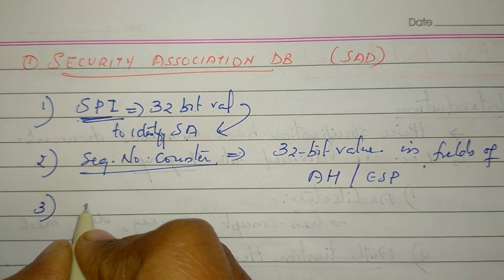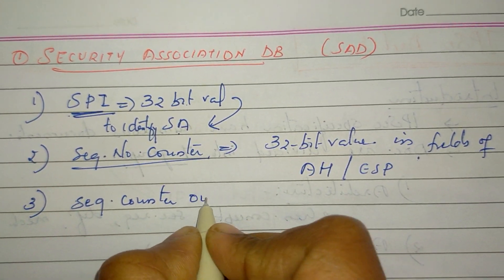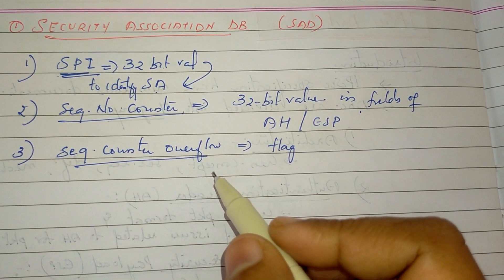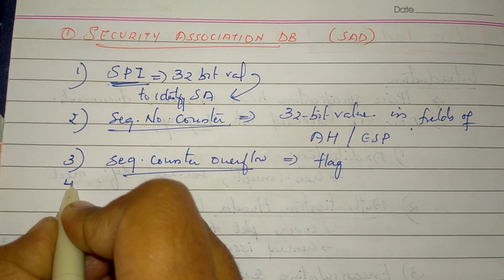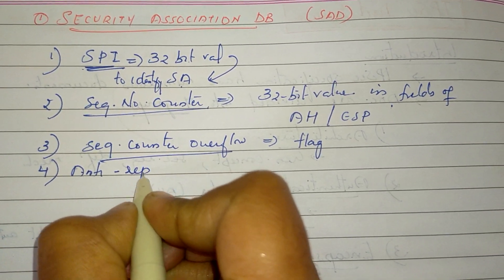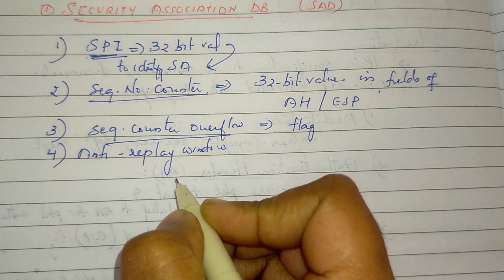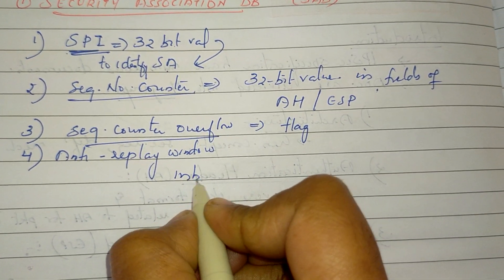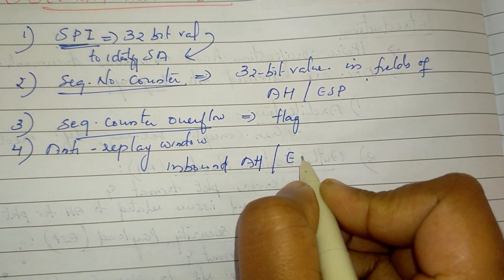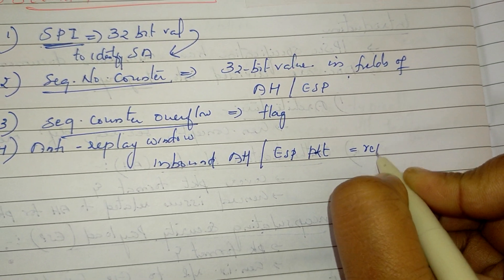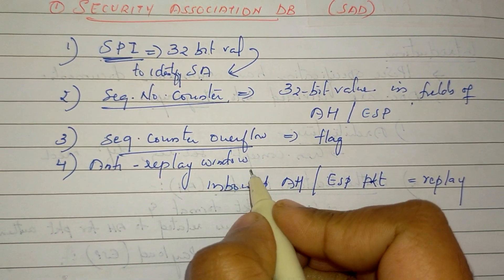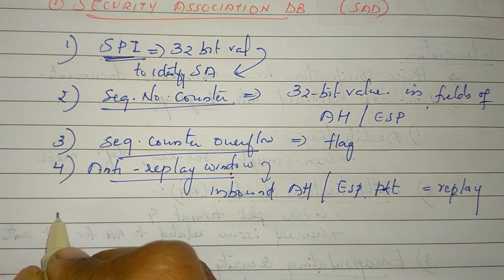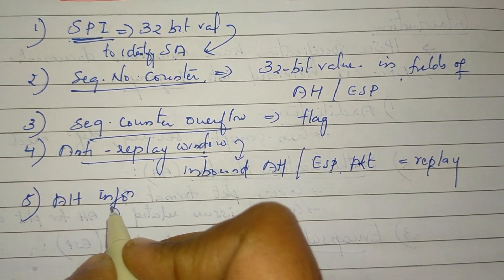The third parameter is the Sequence Counter Overflow flag, which indicates overflow. The fourth is the Replay Window, which determines inbound AH and ESP packet replay — used to identify and manage replay attacks using the authentication header information.